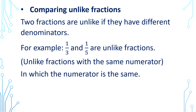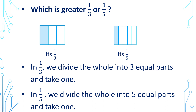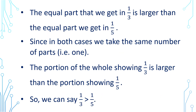Two fractions are unlike if they have different denominators. For example, 1 by 3 and 1 by 5 are unlike fractions — the numerator is the same but the denominator is not. Which is greater, 1 by 3 or 1 by 5? In 1 by 3, we divide the whole into 3 equal parts and take 1. In 1 by 5, we divide the whole into 5 equal parts and take 1. The equal part in 1 by 3 is larger than in 1 by 5, so the portion showing 1 by 3 is larger. We can say 1 by 3 is greater than 1 by 5.